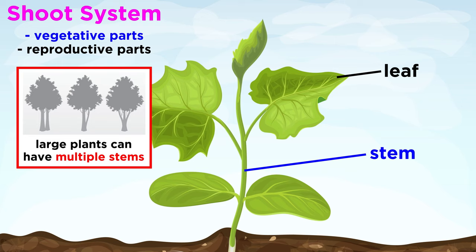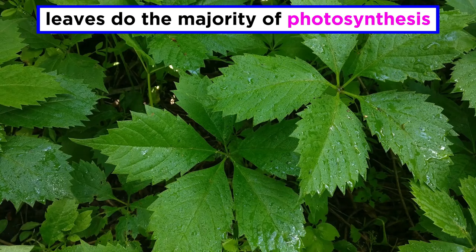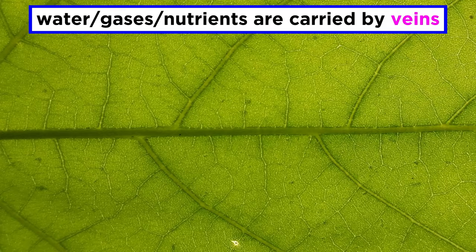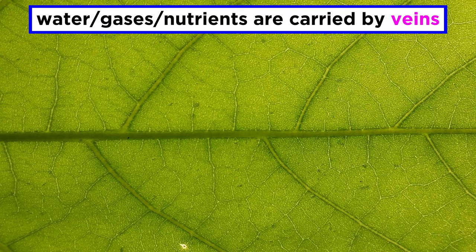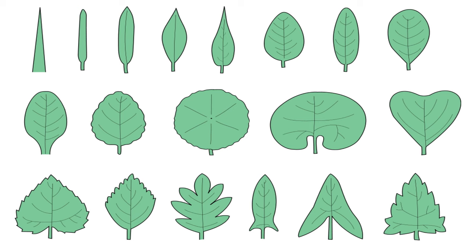The stem may also divide into several smaller stems in bigger, more complex plants like trees. The leaves attach to the stem or branches via small stems called petioles. Leaves do the main work of providing nutrients to the plant through the process of photosynthesis, which we covered in detail in the biochemistry series. Water, gases, and nutrients are moved around the leaves through their veins, which are very tiny tubes of xylem and phloem tissue.